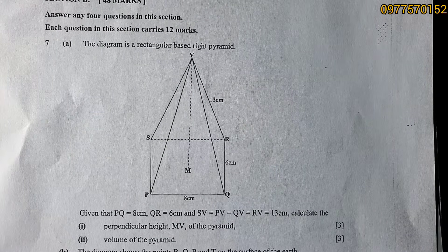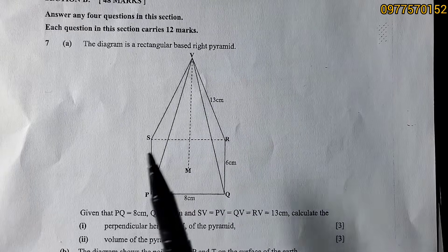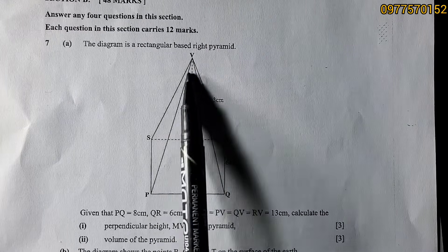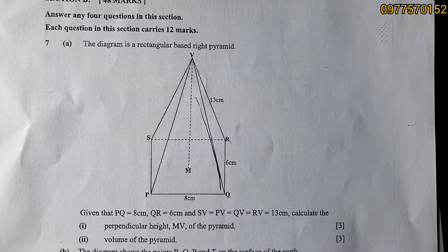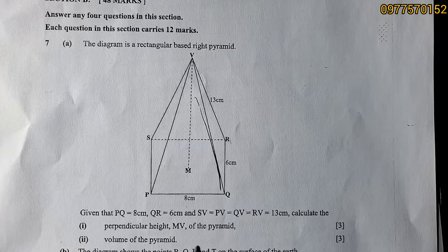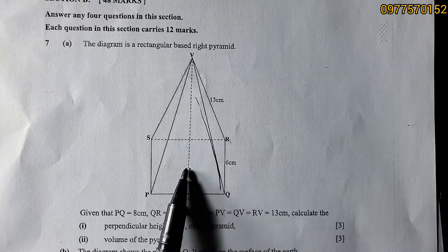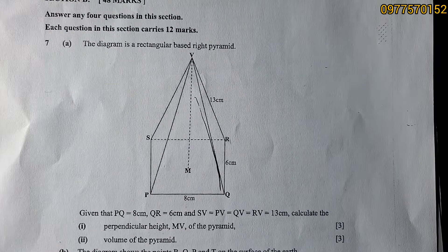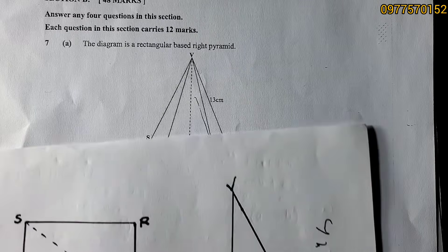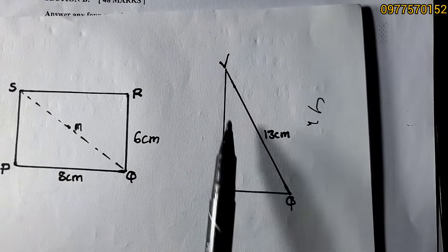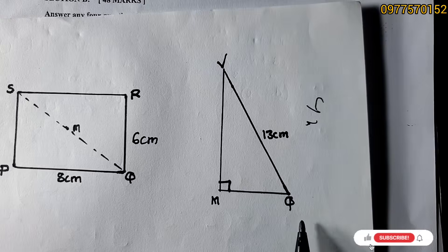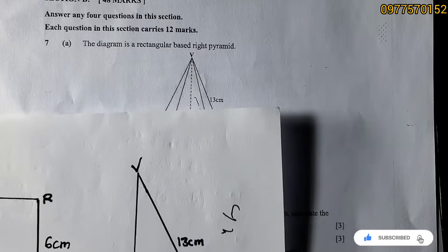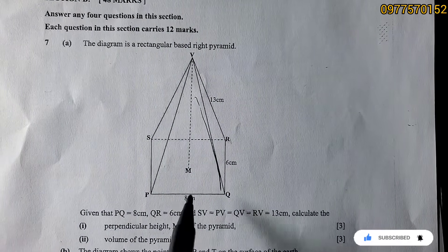Let me explain a few things before we start calculating. MV is the perpendicular height, while the other heights are called slant heights. To calculate MV, we need to identify triangle MQV, which forms a right-angled triangle, so we use the Pythagorean theorem.